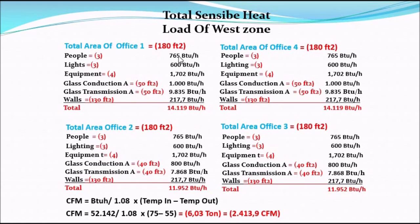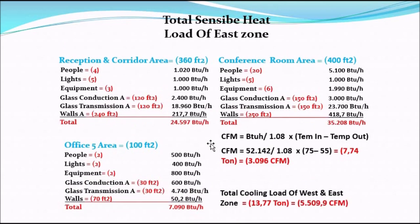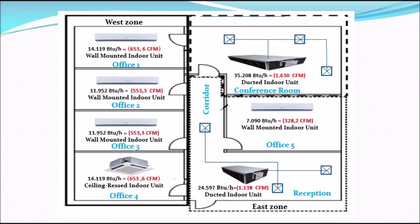I have already calculated the loads for each zone. To determine the required CFM, use the formula: CFM = BTU/hr ÷ (1.08 × (T_supply − T_return)). Adding all numbers together gives a total of 13.77 tons, equivalent to 5509.9 CFM. I've also included an example showing how to select the air handler unit for each space. That's it for today — thank you for watching.